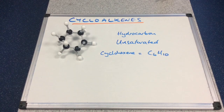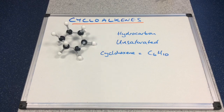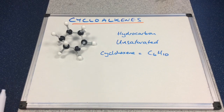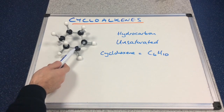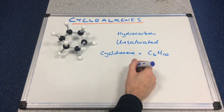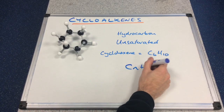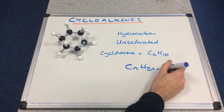In the case of cyclohexene it has the molecular formula C6H10. In terms of general formula, we don't have the alkene general formula anymore. If you remember, that's CnH2n, which would make it C6H12. So the general formula of this cyclic alkene with one carbon-carbon double bond is CnH2n minus 2.